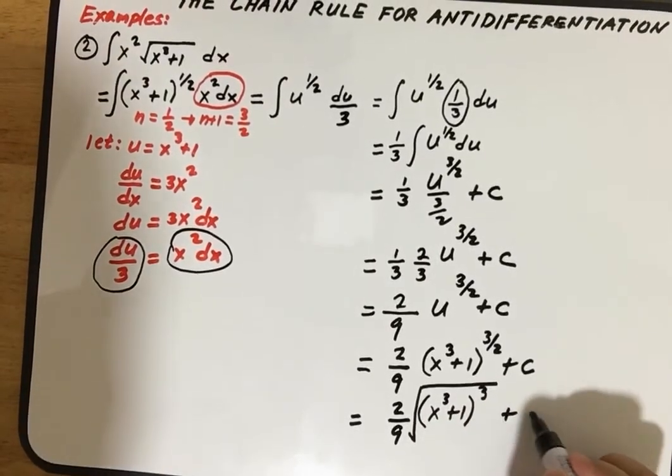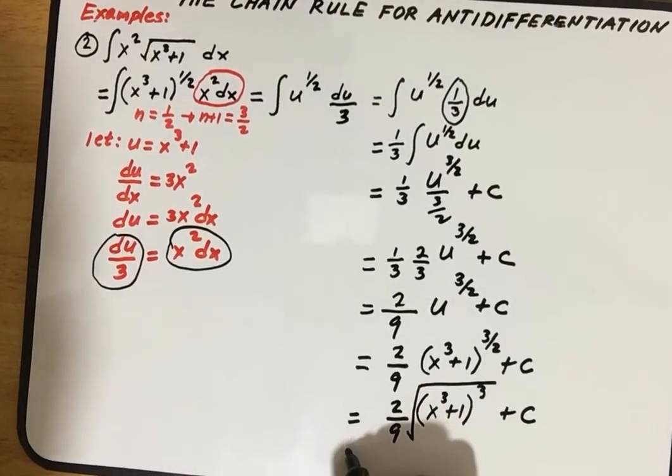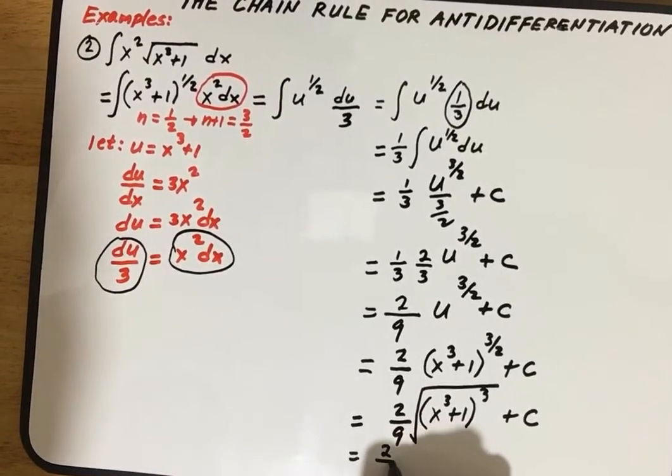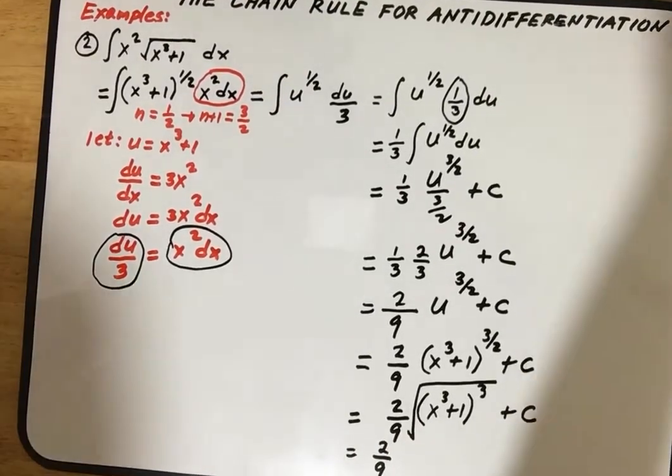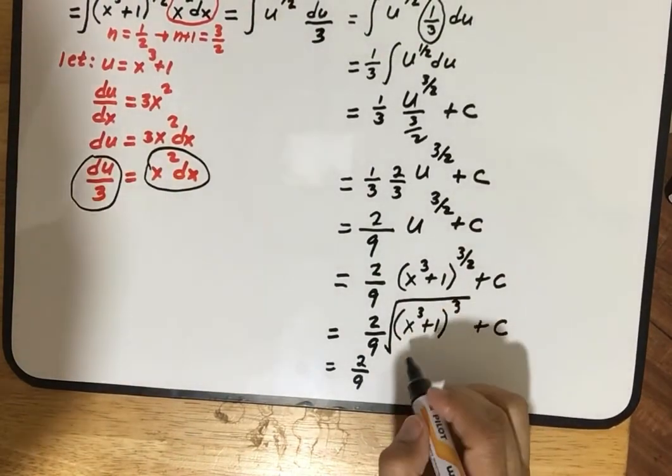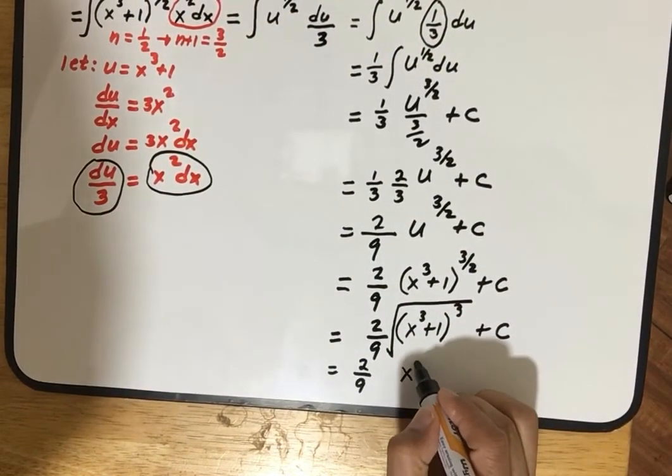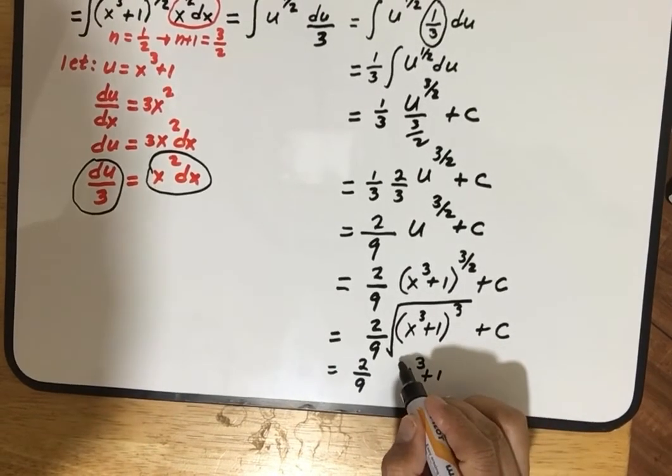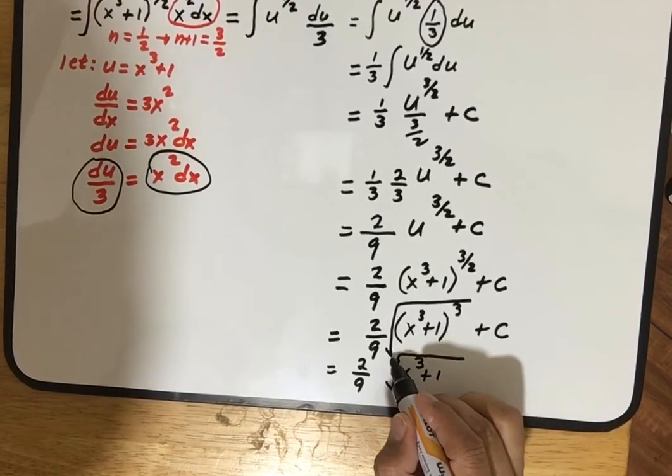This is also equivalent to two over nine times x cube plus one, then you take the square root, and the whole thing to the power three plus c.